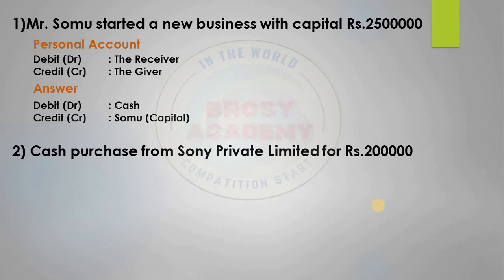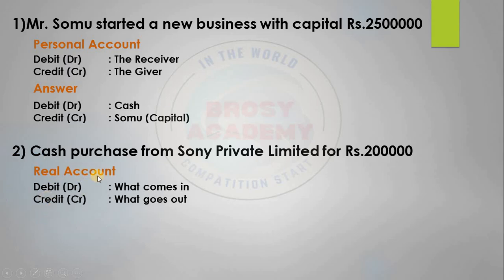This question involves a real account. Cash is a real account. For purchase and sale involving goods, we apply the golden rule for real accounts. The real account rule: debit is what comes in, credit is what goes out.